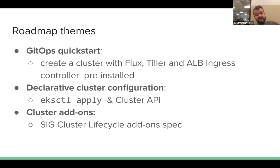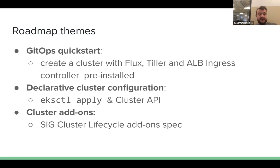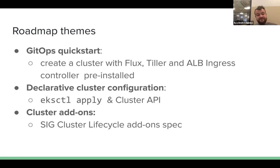Another area is declarative cluster configuration — we're looking to implement 'eksctl apply' and also provide support for cluster API. You'd be able to say 'eksctl apply' given a config, make some changes to the config, run 'eksctl apply' again, and see those changes implemented in the cluster — covering upgrades, scale down, scale up, and other changes. The EKS ctl config is inspired by cluster API but not a one-to-one match; it's somewhat more high level.